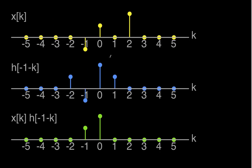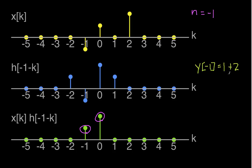For n equal to negative 1, we have x of k and h flipped about 0 and shifted 1 to the left. At k equal to negative 1, x is negative 1 and h of minus 1 minus k is negative 1, giving a product of positive 1. At k equal to 0, we have 1 times 2 giving positive 2. Then 0 times 1, and zeros for everything else. So y of negative 1 is 1 plus 2, which equals 3.